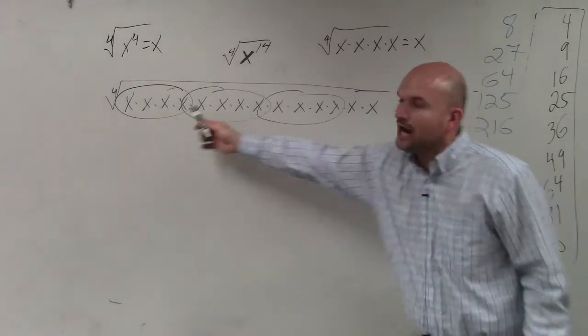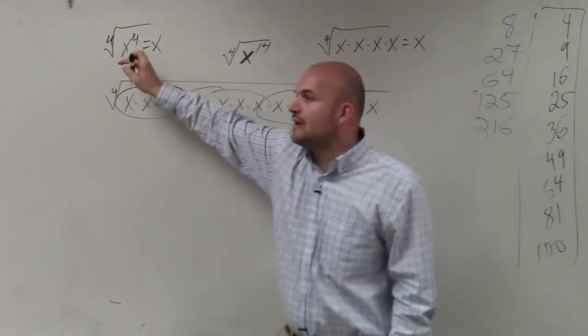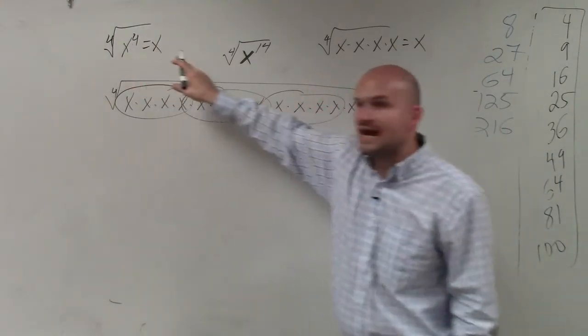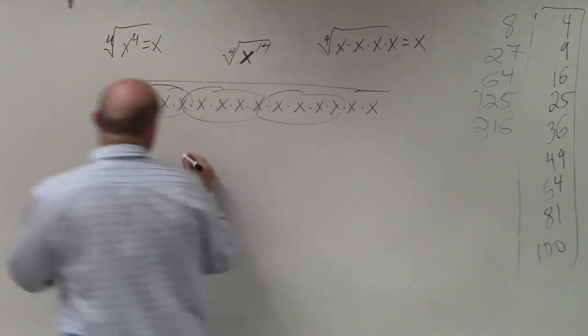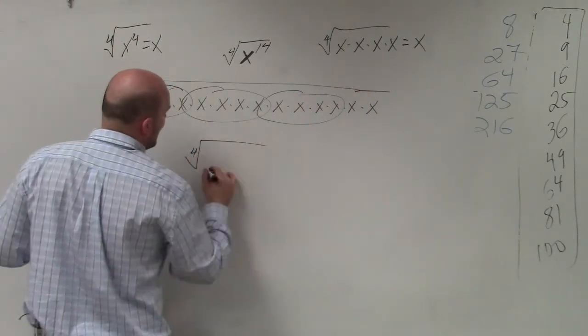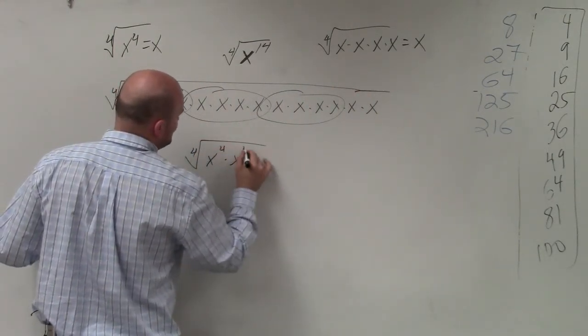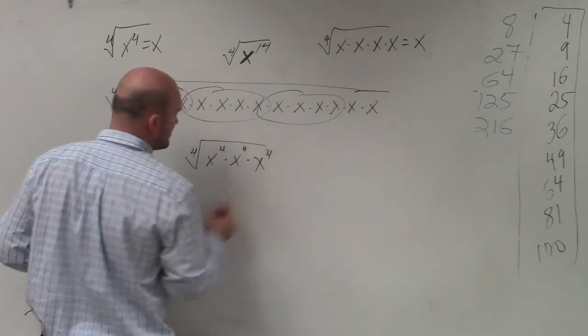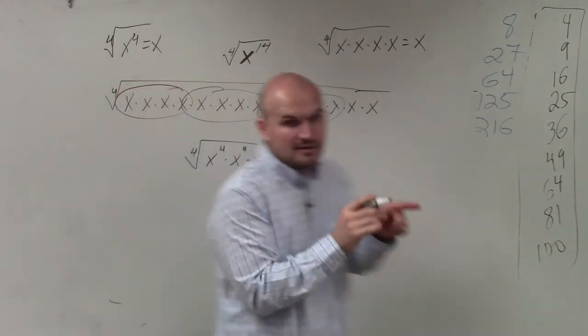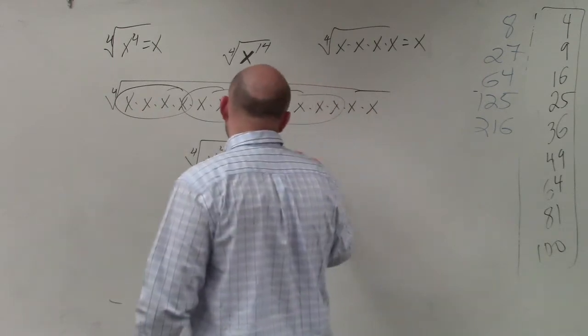So rather than writing it all x's, I can also, how many of x to the 4th can I rewrite this as? So I can rewrite the 4th root as x to the 4th times x to the 4th times x to the 4th and then plus times x squared.